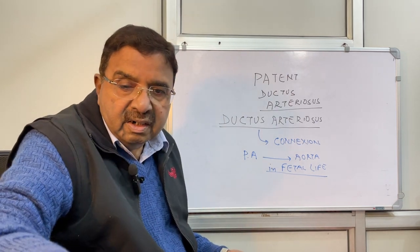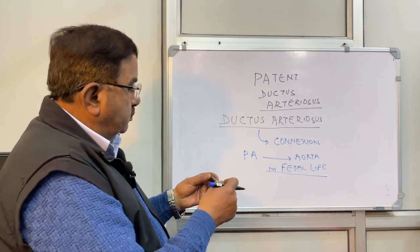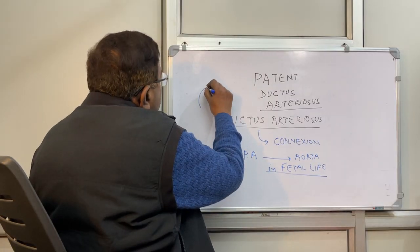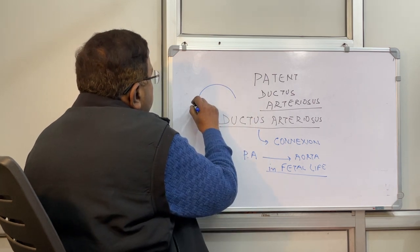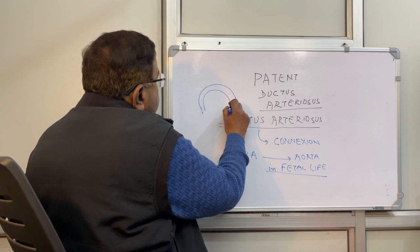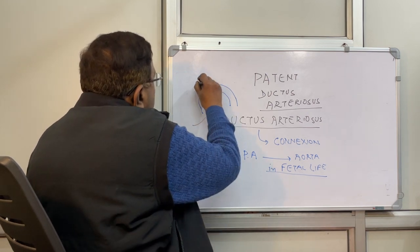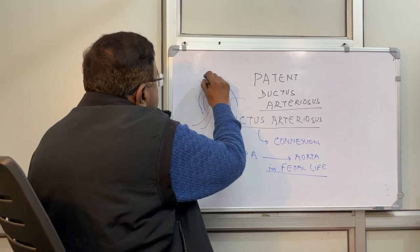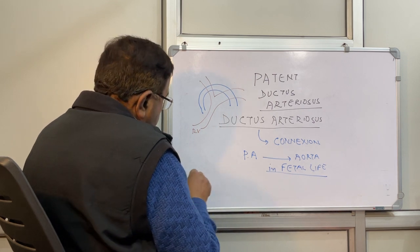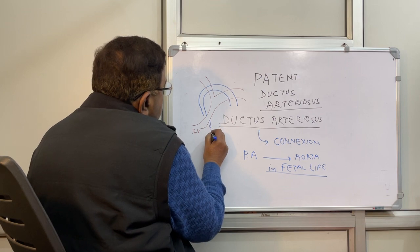I will draw a diagram showing you the presence of this structure. There is pulmonary artery from the right ventricle, and aorta from the left ventricle.